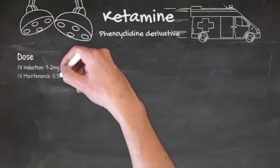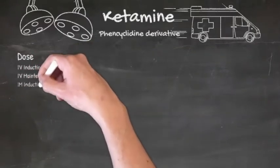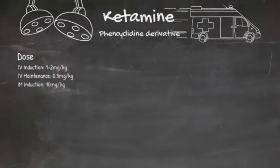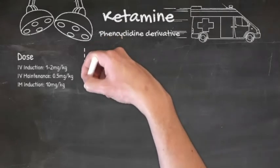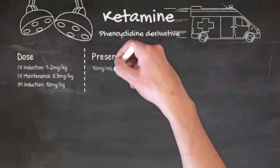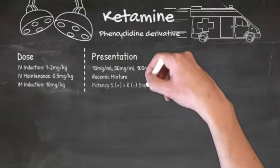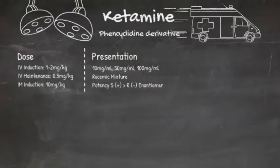When used IV as an induction agent, the standard dose is 1-2 mg per kg, and then you can give IV boluses thereafter at 0.5 mg per kg as maintenance. It can also be given intramuscularly, in which case you'll need a much higher dose of 10 mg per kg, so it's useful to have a more concentrated solution to avoid large volumes. Ketamine comes as 10, 50, and 100 mg per ml, so definitely worth checking the bottle carefully.